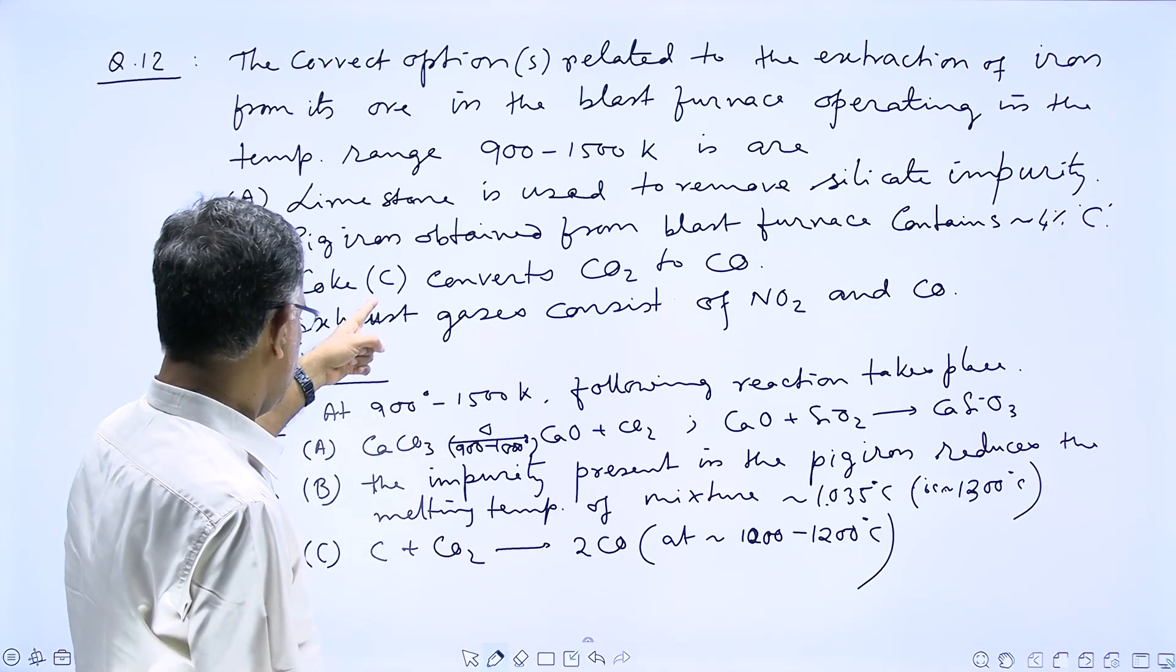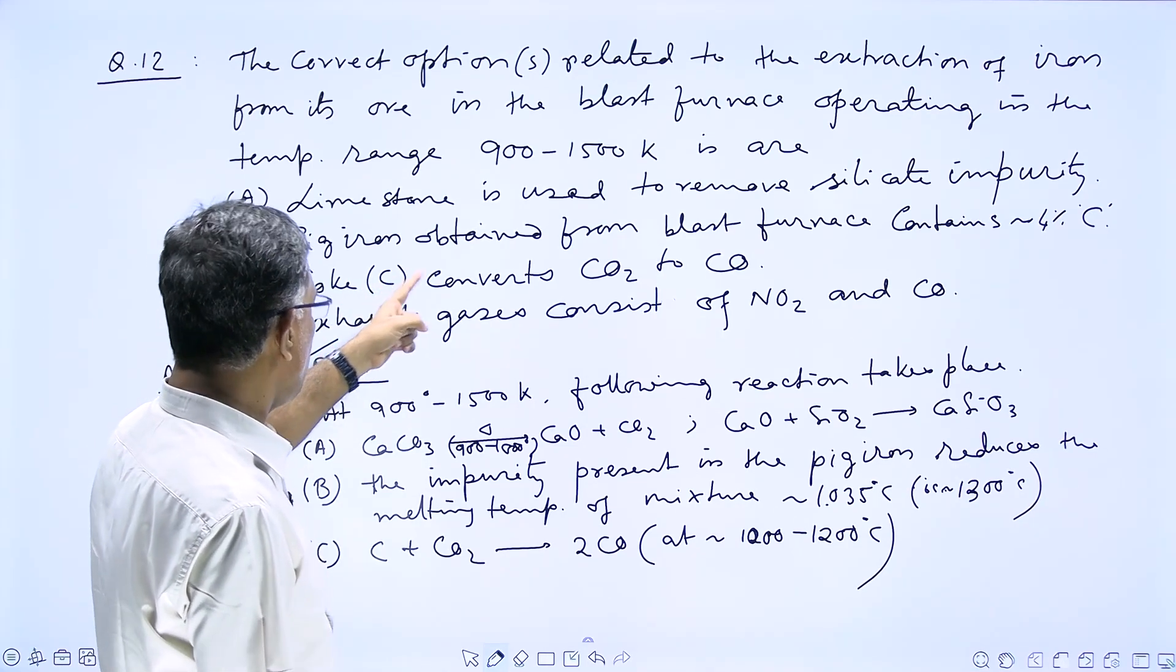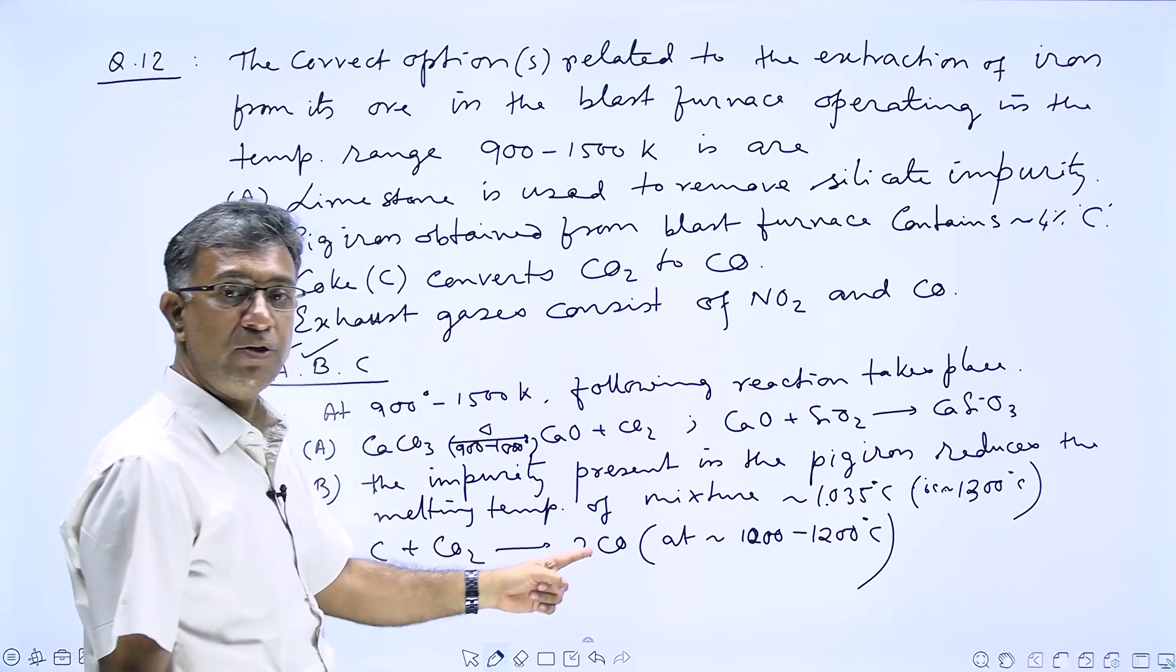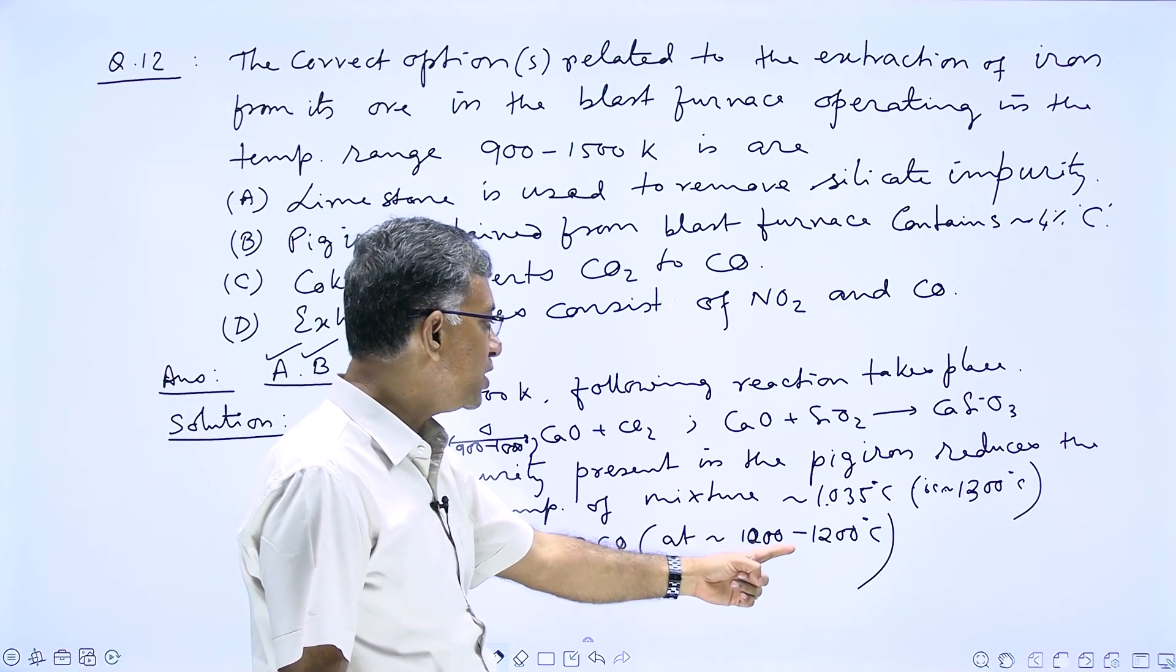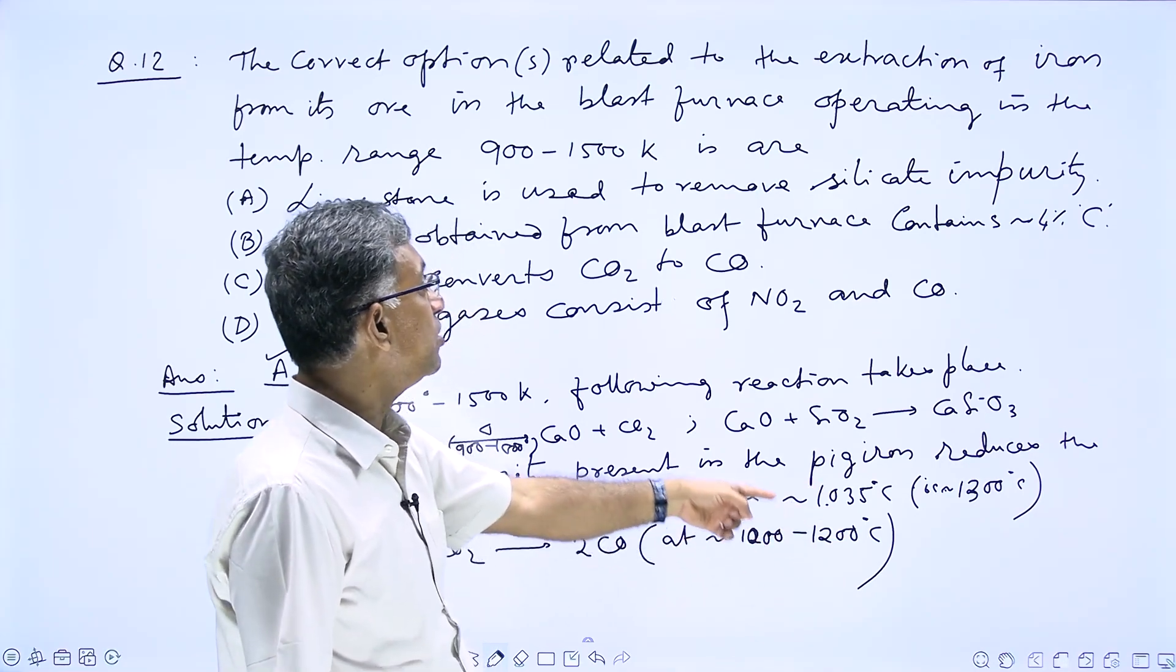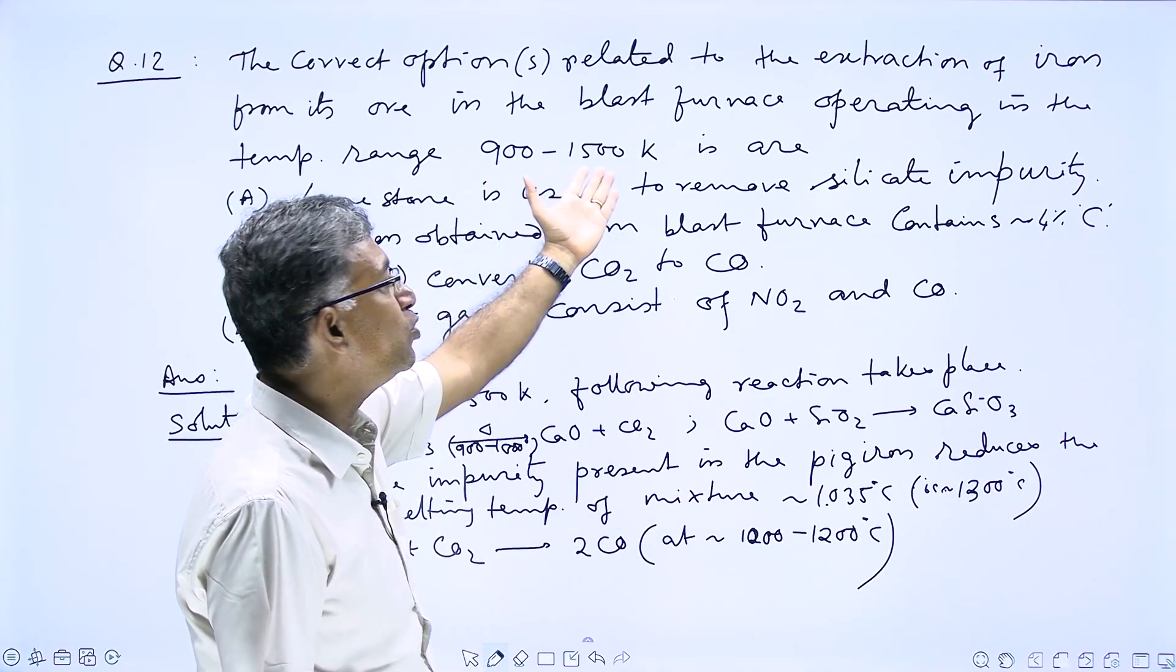And C, according to the fact, there is coke powder. Coke powder reacts with carbon dioxide to produce 2 moles of CO, and that temperature range is around 1000 to 1200 degrees centigrade. So it is also in the range of 900 to 1500 Kelvin.